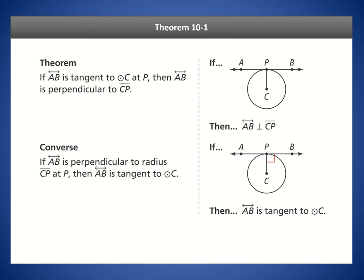Theorem 10-1 states that if AB is a tangent to circle C at the point of tangency P, then at the point of tangency it must be perpendicular. The reverse of that is: if it is perpendicular, then AB must be a tangent to circle C — that is, if you start out knowing that angle is 90 degrees.